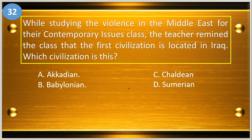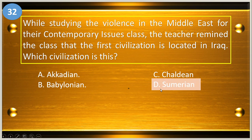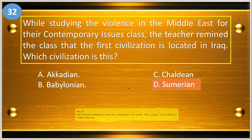Number thirty-two: while studying the violence in the Middle East for their contemporary issues class, the teacher reminded the class that the first civilization is located in Iraq. Which civilization is this? A, Akkadian; B, Babylonian; C, Chaldean; and D, Sumerian. The answer is letter D, Sumerian.